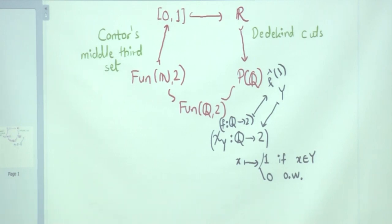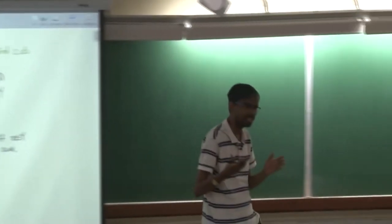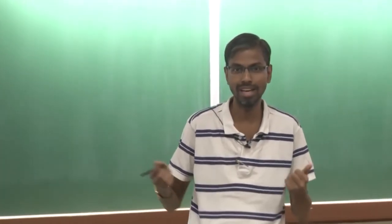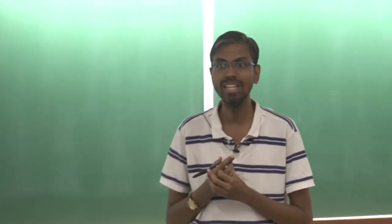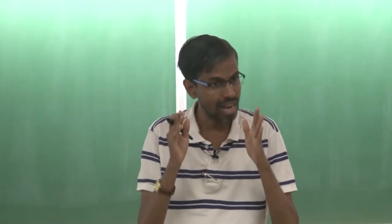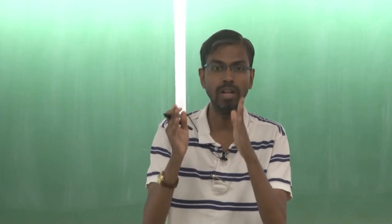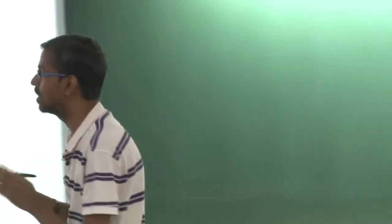Our job today is to finish these two green descriptions. Real numbers are complicated, even though all of you feel like you know the real line. They were actually introduced to fill up gaps between rational numbers. All of you know that rational numbers are dense. Given any two different rational numbers, there must exist a rational number between them. Let us write down that property first.